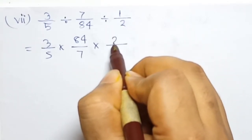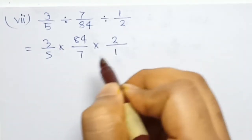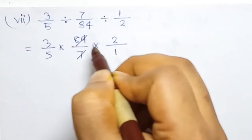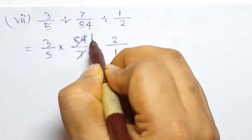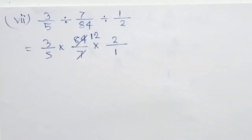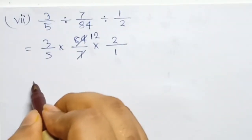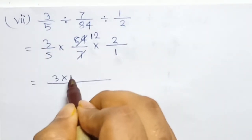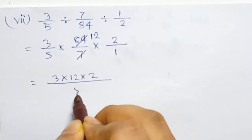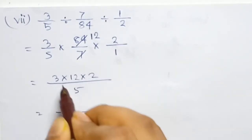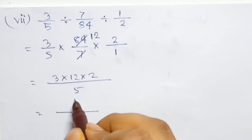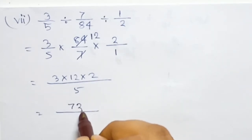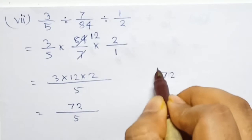Next, equals 84 by 7. Next, divide becomes multiplication — reciprocal is 2 by 1, which is only 2. So cancellation: seven and seven cancel — eighty-four divided by seven is twelve. Next, cancel — numerator: three into twelve into two. Our denominator number is five. So three into twelve into two.